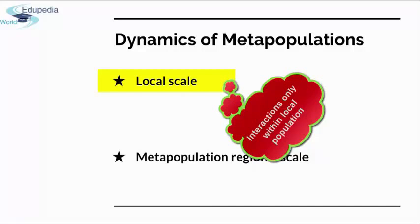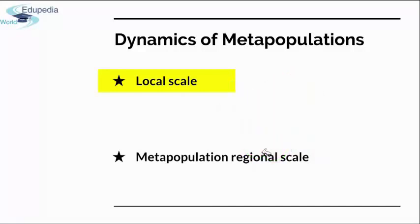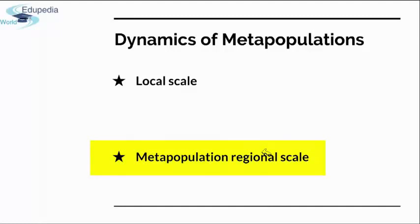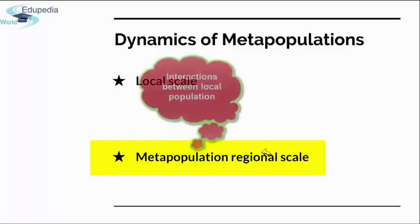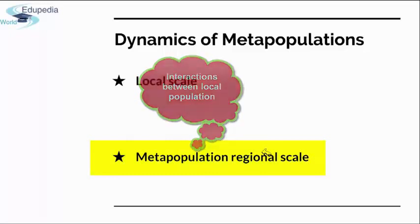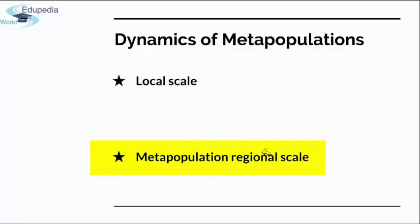Population growth and regulation at the local scale are governed by regular demographic processes such as birth and death. The second scale is the metapopulation regional scale, which is composed of the set of local populations that make up the larger metapopulation. Dynamics at this scale are governed by interactions among local populations, namely the processes of dispersal and colonization. Think of a city as a local scale — people living within it in their daily routine.